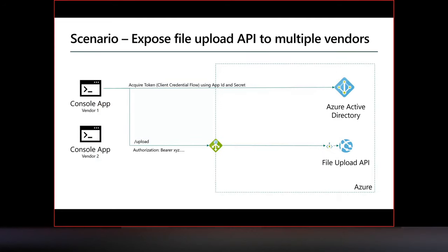Our use case is a file upload API that we want to expose securely to multiple vendors — imagine collecting videos from different vendors. Each vendor gets their own credentials to upload data. Key requirements are: control individual vendor access, be able to terminate access at any time, and rotate the client secret if it gets compromised. To meet these requirements, we can secure the file upload API using OAuth and Azure AD.